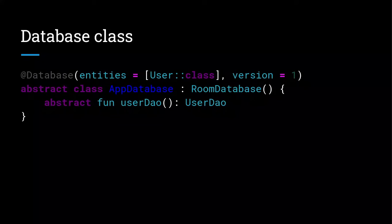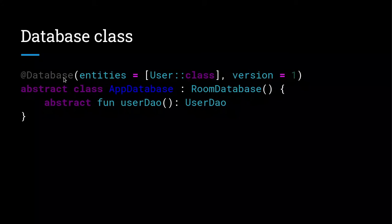We also have the Database class, which is responsible for giving us access to the database. It is an abstract class annotated with @Database, and it gives us access to the DAO. Here we can provide the list of all our tables — in our case, just the User class. The version number corresponds to the version of our database, so if we add another table, we increment this version number to two, for example. We'll see this step-by-step as we continue through the tutorials.